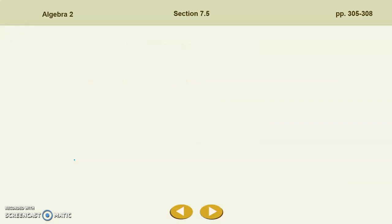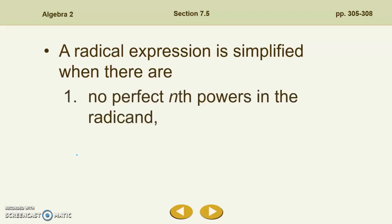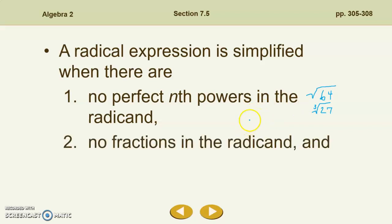When simplifying radical expressions, we have a couple of ways to know when it's completely simplified. First, there will be no perfect nth powers in the radicand. For example, the square root of 64 is not completely simplified because we have a perfect square in our radicand. Similarly, the cube root of 27 is not completely simplified because we have a perfect cube inside the radicand. We also know it's simplified when there are no fractions in the radicand.